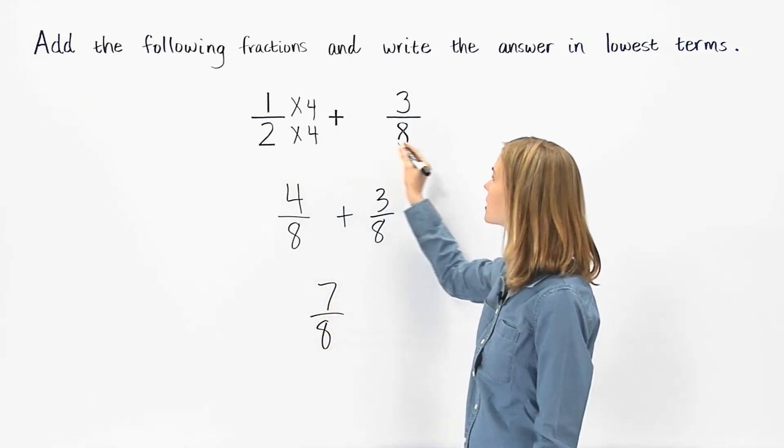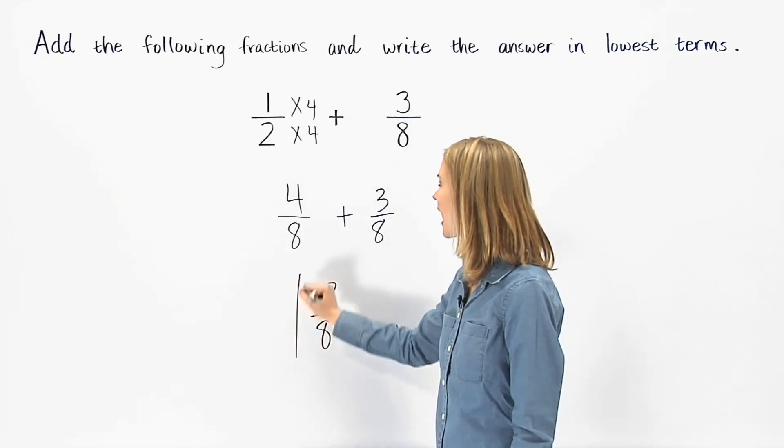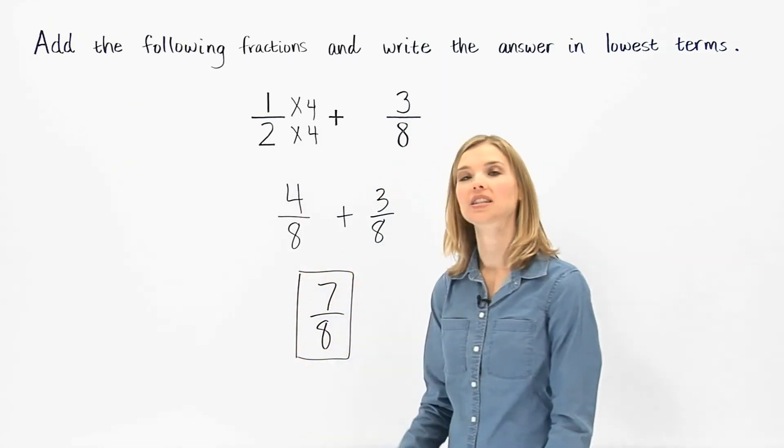So 1 half plus 3 eighths is 7 eighths, which is in lowest terms.